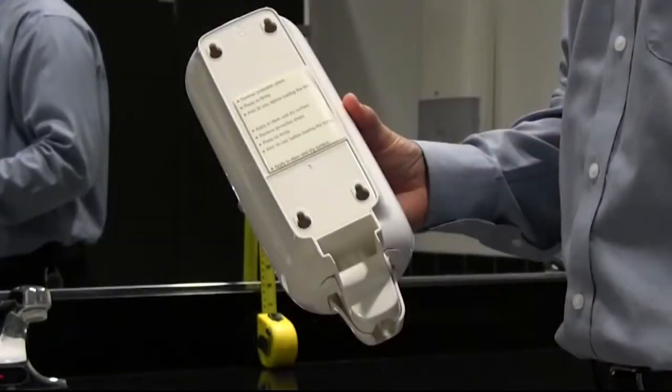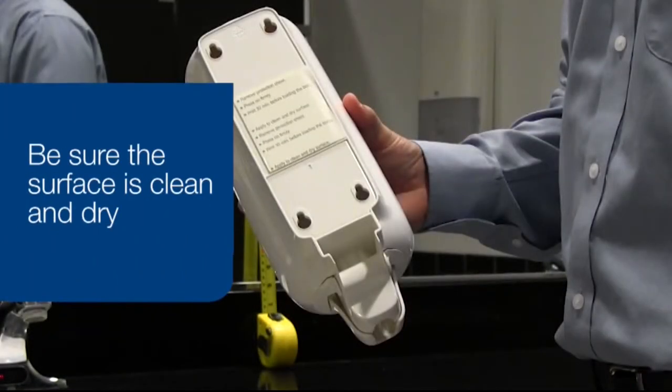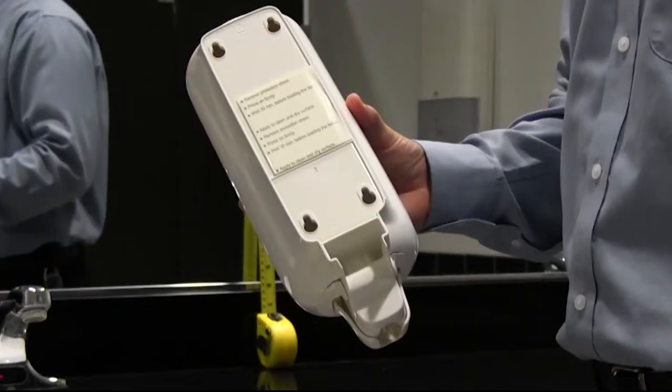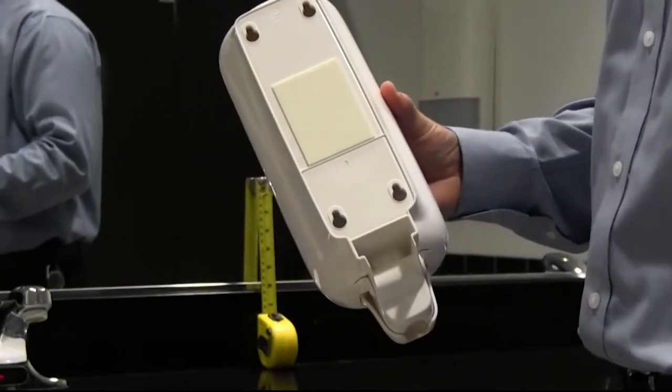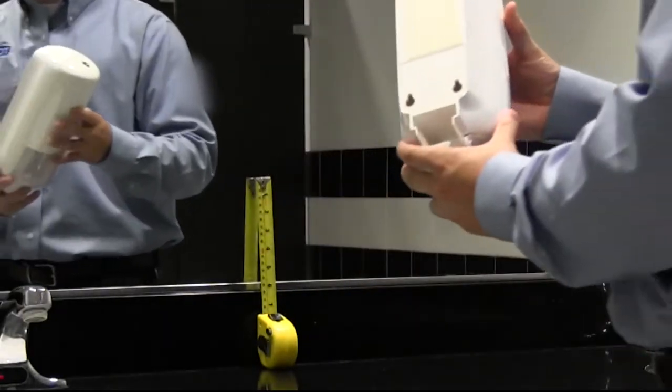Before installing, be sure the surface is clean and completely dry. Remove the protective sheet from the tape on the back of the dispenser. Hold and press firmly on the surface.